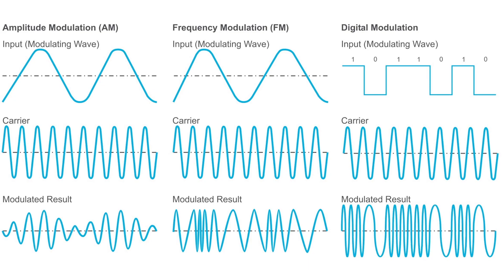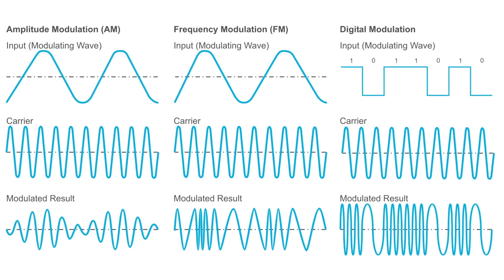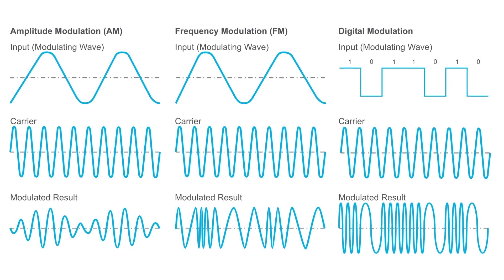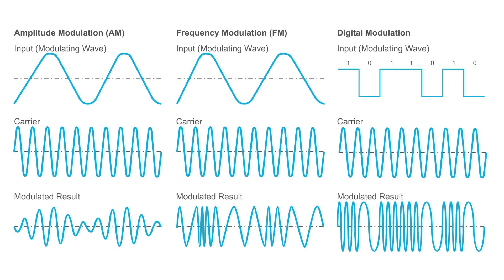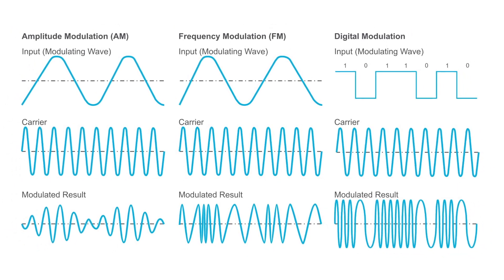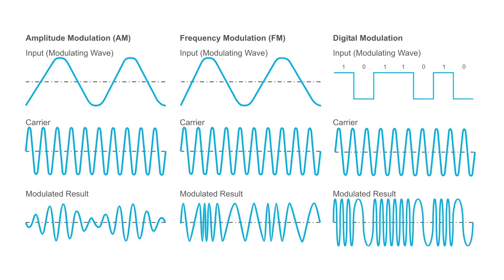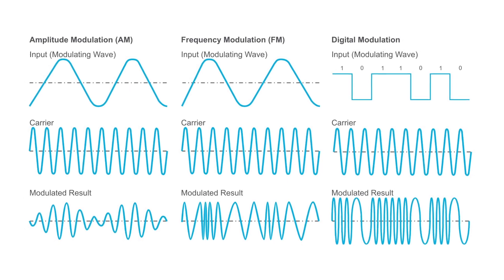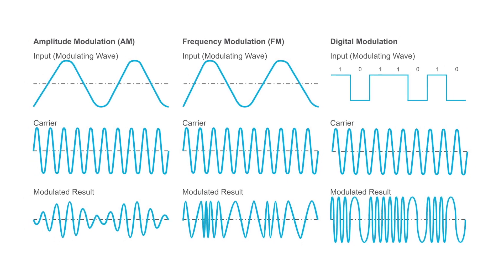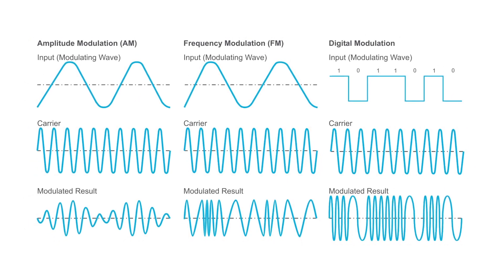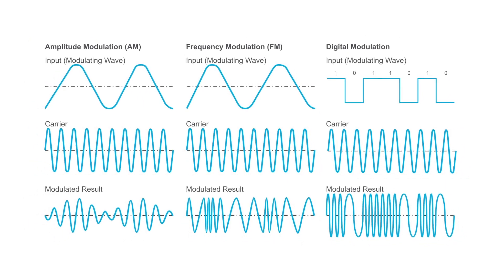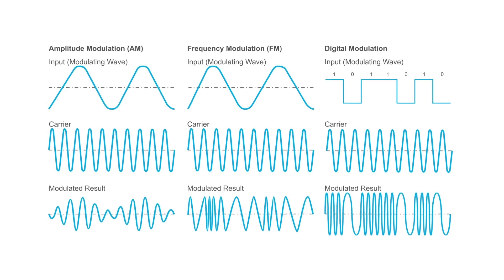We could even combine these two strategies to create a third scheme of some kind. Any strategy which combines, in some systematic fashion, an input signal with a carrier wave to encode speech or other useful information is called a modulation scheme.